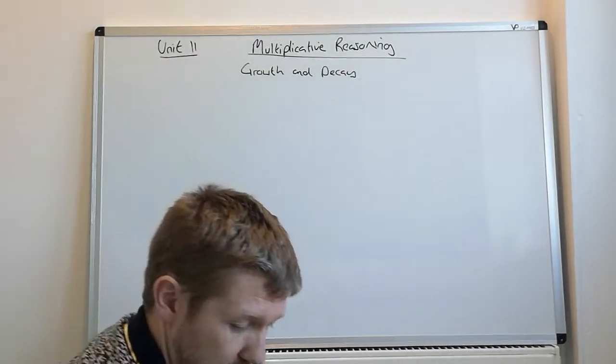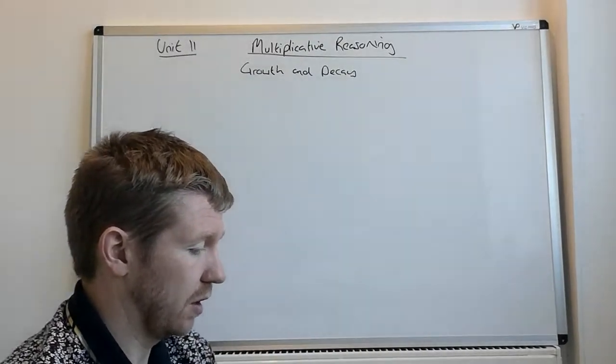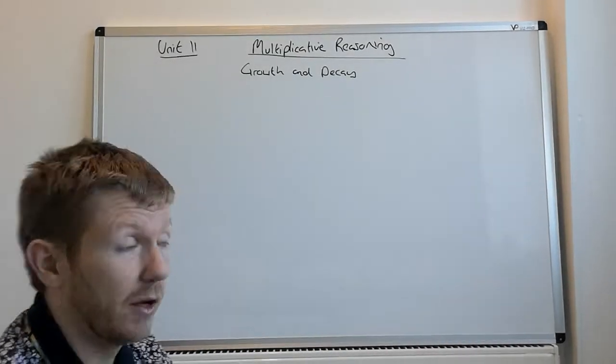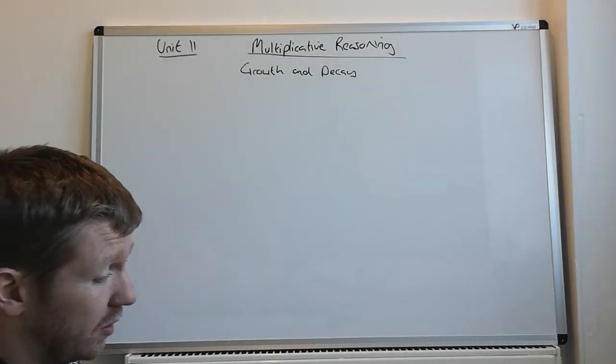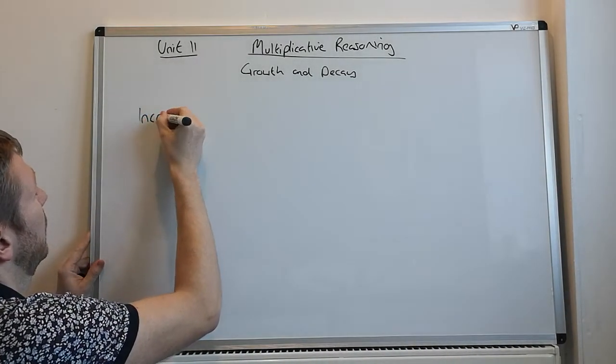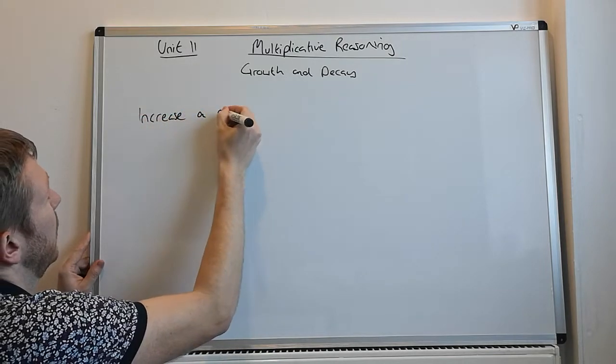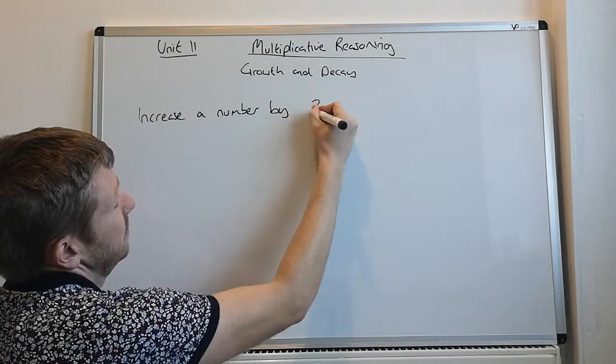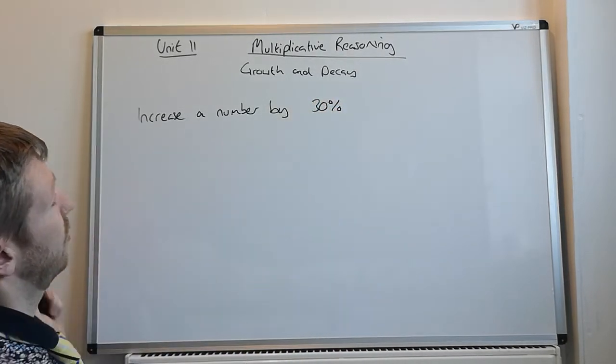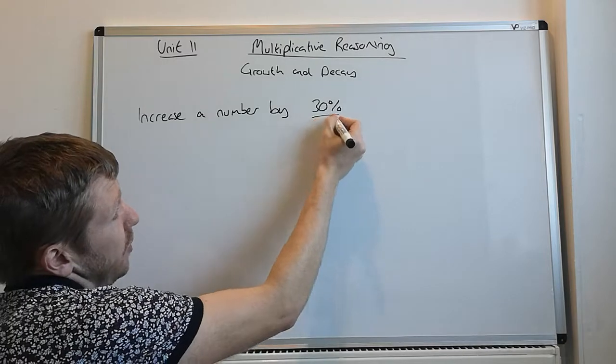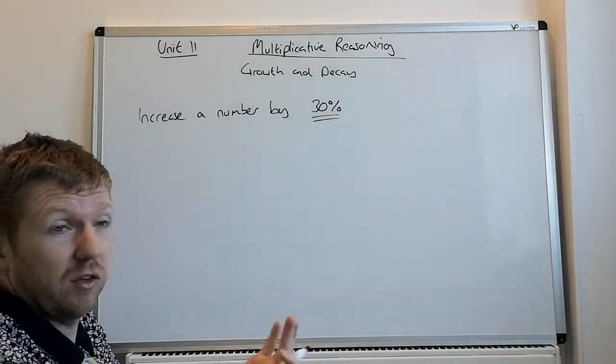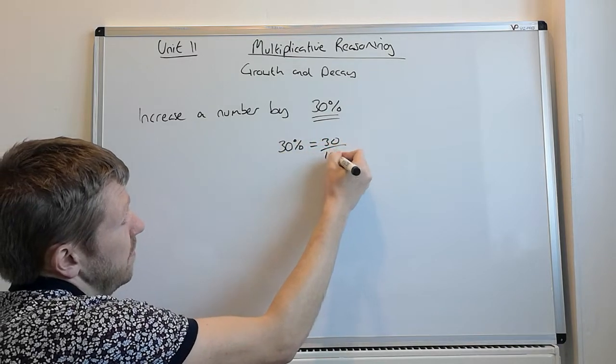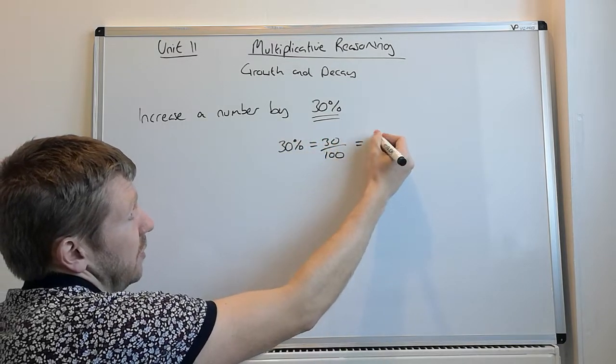There's quite a few things I need to remember to tell you in this particular session. So first thing we need to do is think about multipliers. If they said increase a number by say 30%, what we need to think about is what is 30% as a decimal? So 30% is the same as 30 out of 100, which is the same as 0.3.